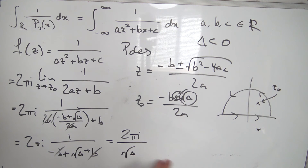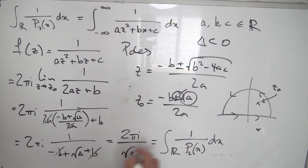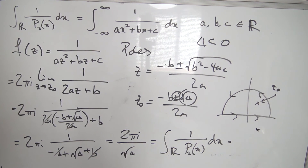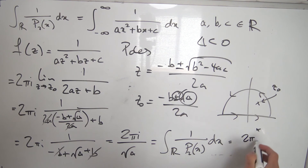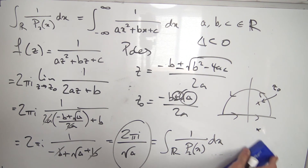That is basically our final result: the integral over the real numbers of 1/p2(x) dx = 2πi / √discriminant. You might ask why this has an i — why is it imaginary? Remember, our discriminant is less than zero, so the square root of the discriminant is imaginary. If you prefer, you can write it as 2π / √(−discriminant), since the i from the square root cancels the i in the numerator. But 2πi / √discriminant is the cleaner-looking expression.